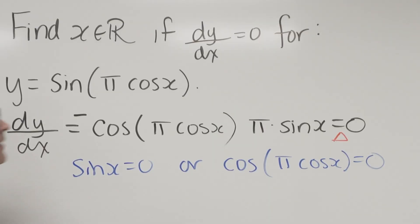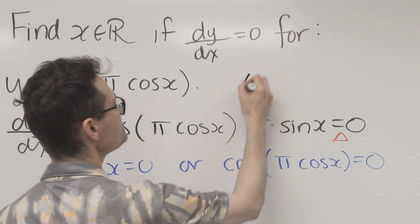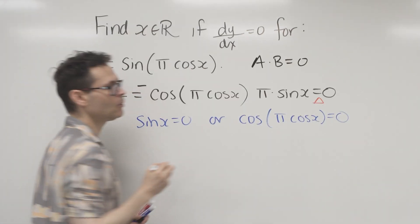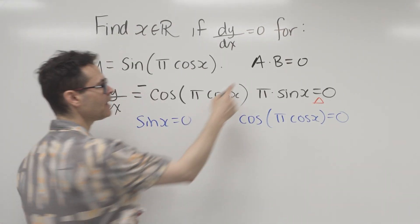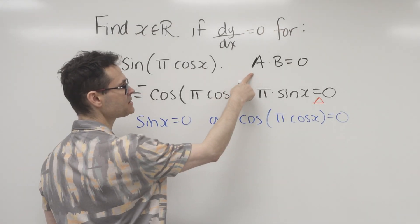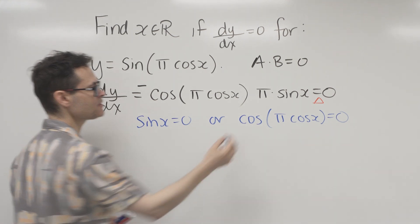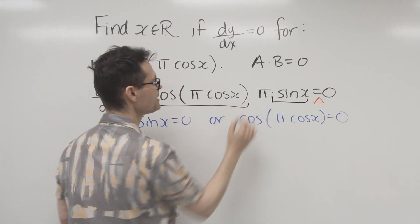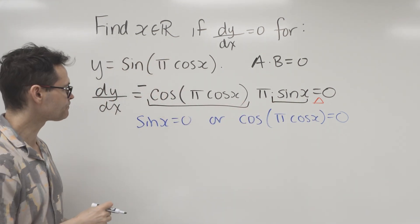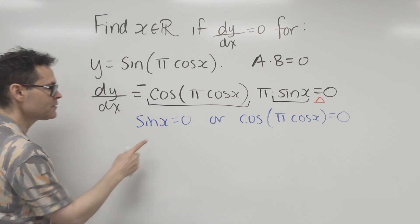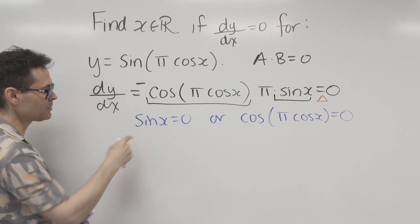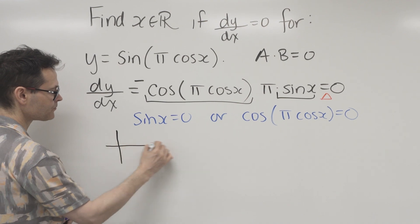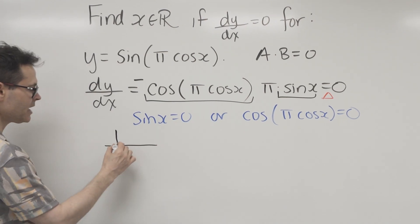Don't forget: if A times B equals zero, either A equals zero or B equals zero. Think of sin(x) as A and cos(pi·cos(x)) as B — two things multiplied together. The first equation looks much easier to solve, so I'll start there.